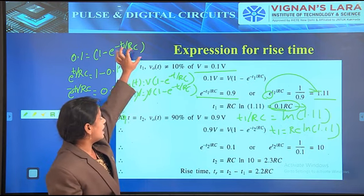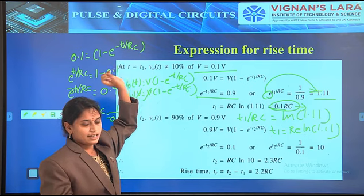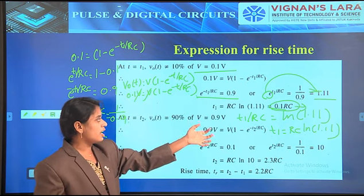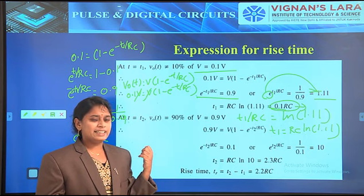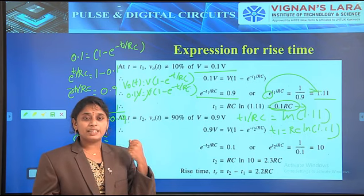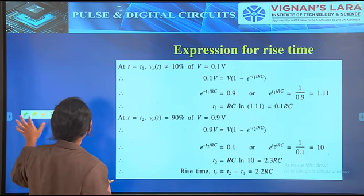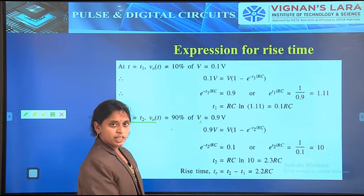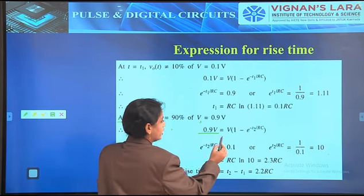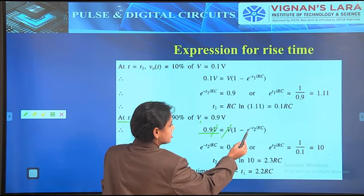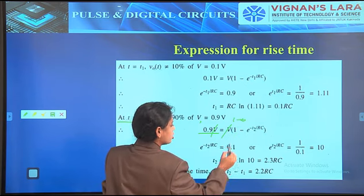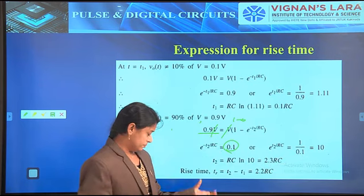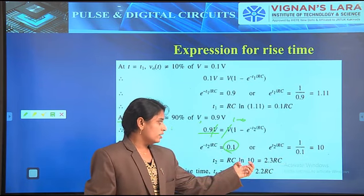In a similar way, we solve at T equal to T2, that is at 90 percent level. At T equal to T2, the output V0 of T is equal to 90 percent, so V becomes 0.9V. Substituting and cancelling V, e power minus T2 by RC becomes 1 minus 0.9, that is 0.1. Then e power T2 by RC equals 10, and T2 equals RC times ln of 10, that is 2.3RC.